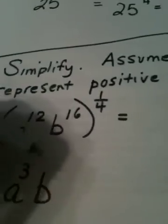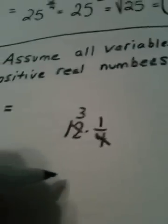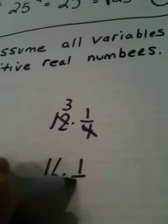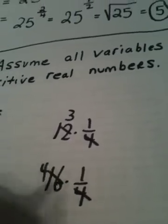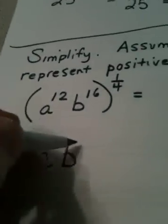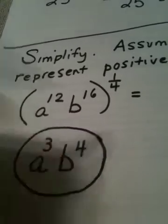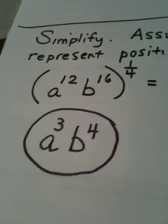And likewise on the b, 16 times one-fourth is 4. So pretty direct.